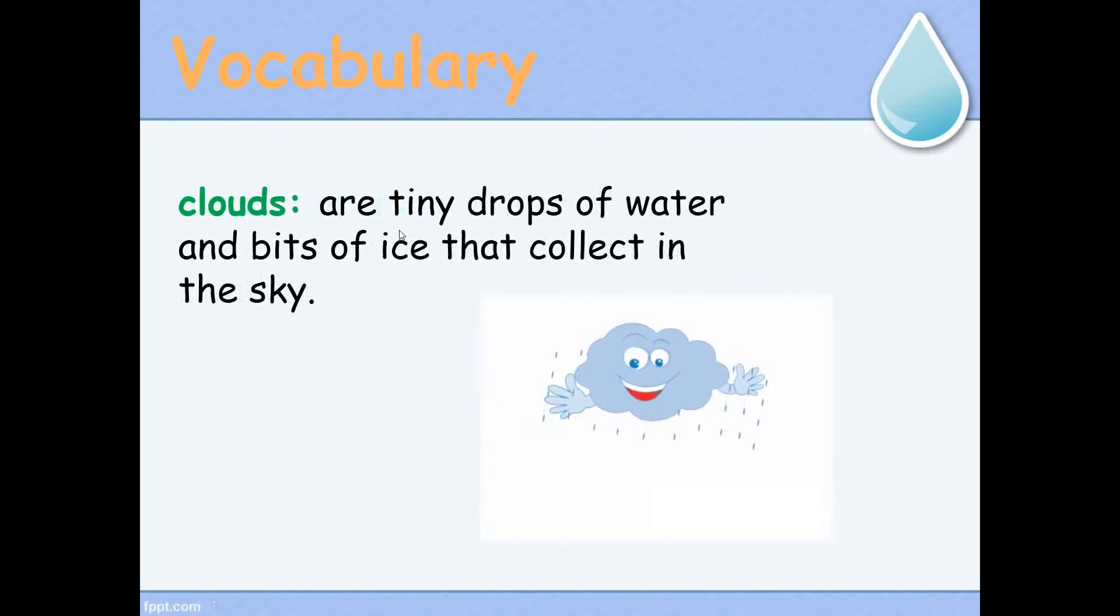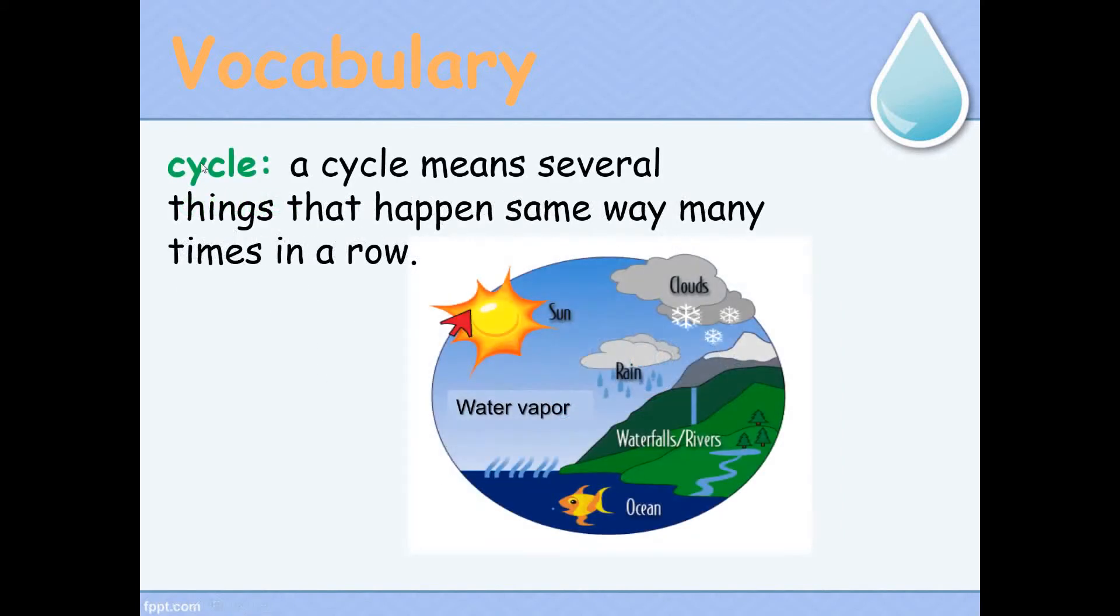Clouds are tiny drops of water and bits of ice that collect in the sky. A cycle means several things that happen the same way many times in a row.